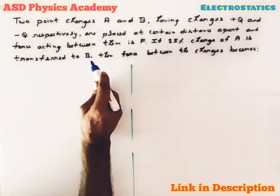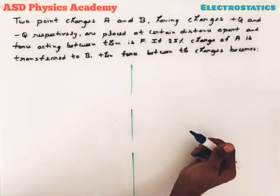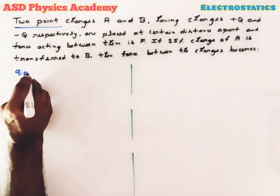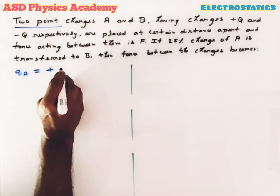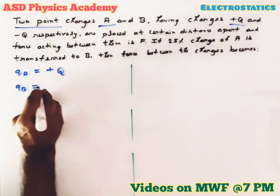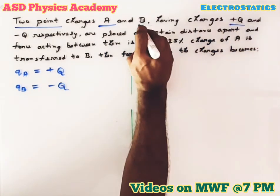So according to the question, I have taken two point charges. Let's take qa = +q, this A is +q and qb = -q.